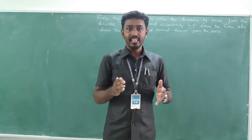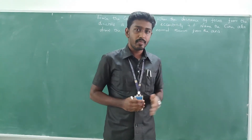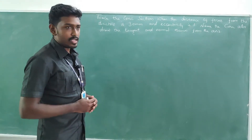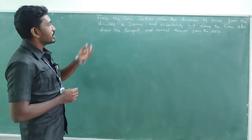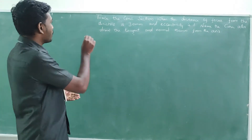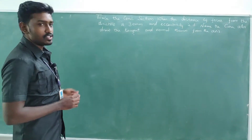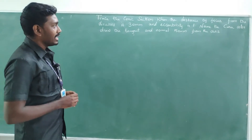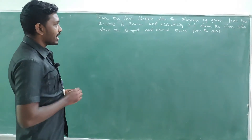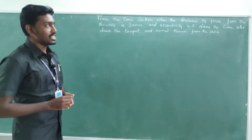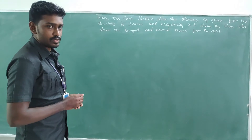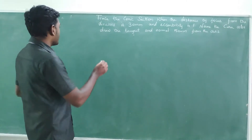Welcome students. In this video session I come up with another question from conic curves. The question is: trace the conic section when the distance of focus from the directrix is 30 mm and eccentricity is 1. Name the curve also, and draw the tangent and normal 50 mm from the axis.